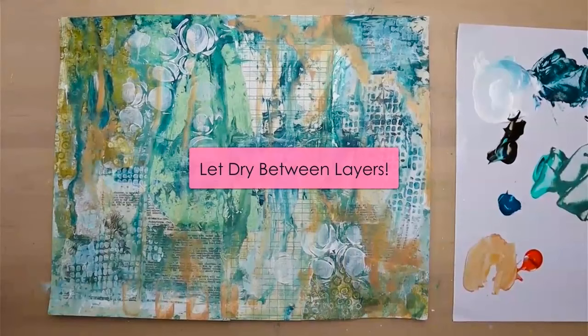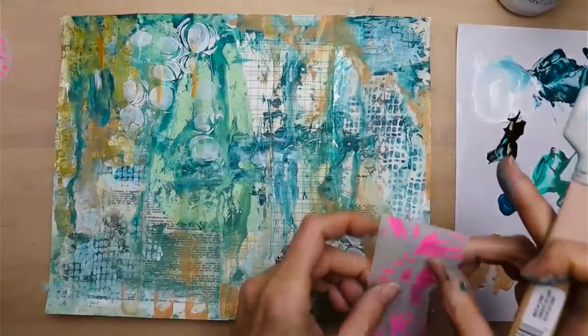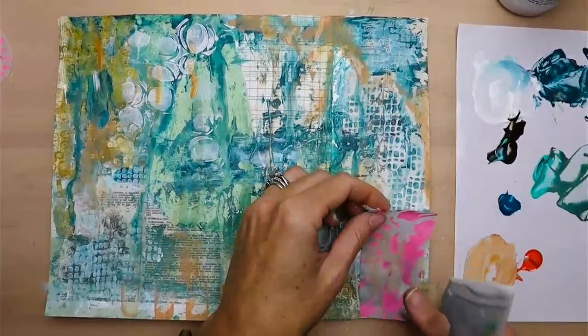And again, a reminder just to let things dry in between the layers, especially if you're going to glue things down like I'm doing here. So I'm using satin medium to put down some of my jelly prints. These are ones that I've printed on some deli paper.